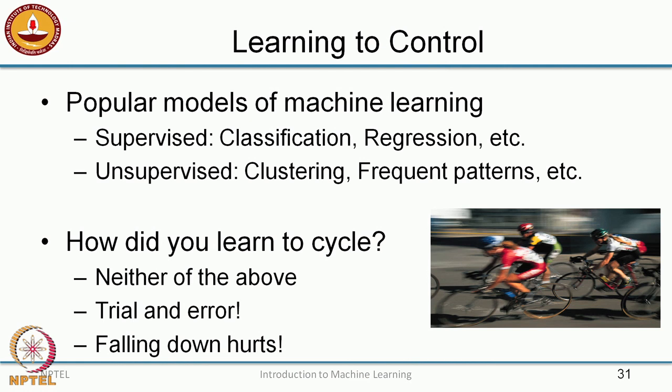I have a question for you: how did you learn to cycle? Was it supervised learning or was it unsupervised learning? There was really no one telling you how you should cycle — how much pressure you should put with your left foot, what angle you should be leaning at. And it wasn't completely unsupervised either, because it's not like you just watched people cycling and then magically got on a cycle and started cycling. So what was the crucial thing? There was a trial-and-error component.